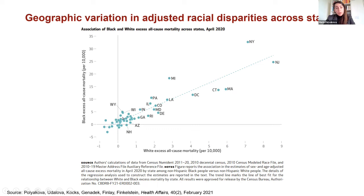A puzzling finding is that several states showed white excess all-cause mortality near zero — consistent with the virus not yet reaching those states — but mortality among Black and Hispanic populations was already quite pronounced. This raises the question of whether indirect effects of the pandemic, such as exposure to economic consequences or reduced non-COVID healthcare consumption, were affecting minority populations at a faster pace. These differences are likely related to broader geographic variation in health and racial health disparities in the U.S., and will be the subject of future research.